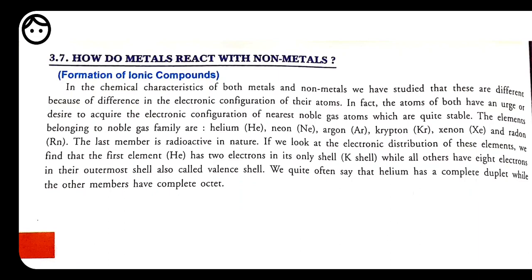To get noble gas configuration — noble gases are also called inert gases — these are elements whose valence electron configuration is complete and stable. That's why all elements want to achieve noble gas configuration. To attain it, elements either lose or gain electrons to complete their octet. When a bond is formed by the loss or gain of electrons, it is called an ionic bond, and the compound formed is called an ionic compound.